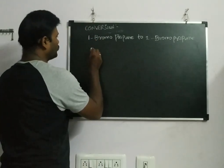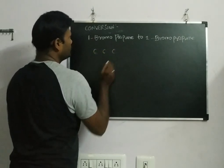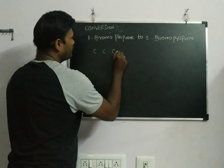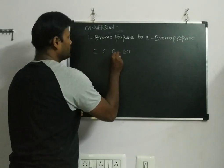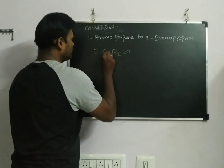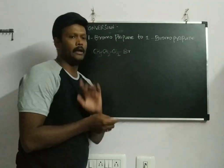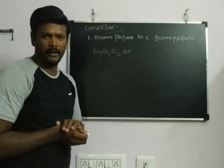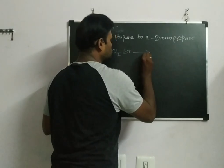First, 1-bromopropane. Propane means three carbon atoms, so one, two, three carbon atoms. First carbon, I will be getting bromine. Now we can satisfy the carbon, that is hydrogen: CH3-CH2-CH2-Br. This is 1-bromopropane.